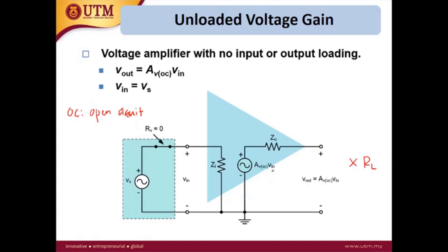Because the current is zero and the voltage drop across Zout is zero, Vout is equal to Avoc·Vin. If the internal resistance is zero, then Vin equals Vs. This is the unloaded voltage gain.